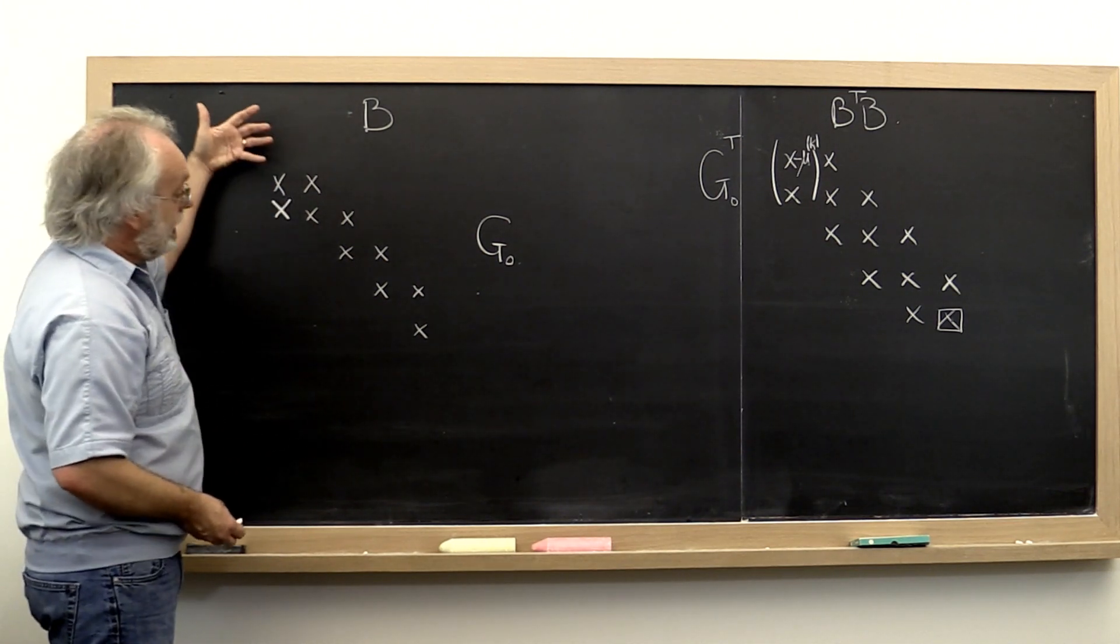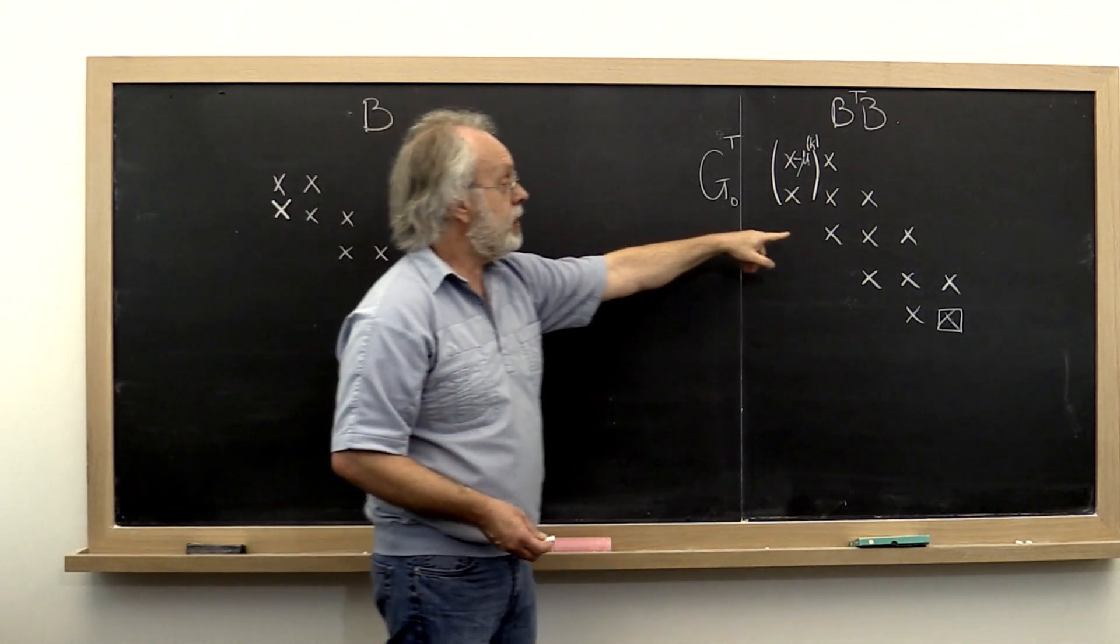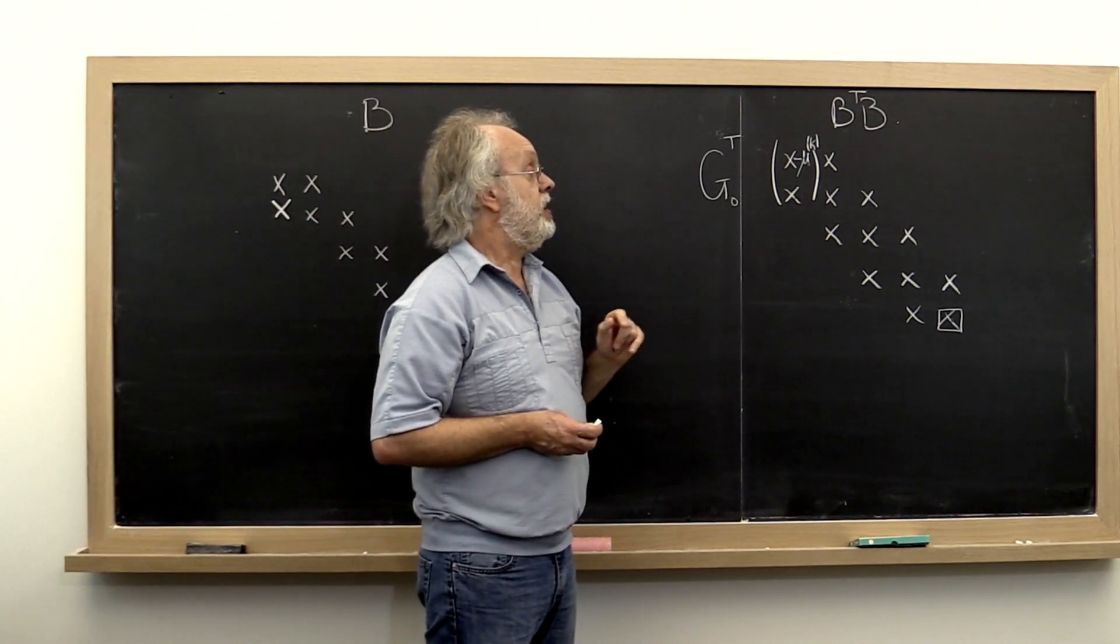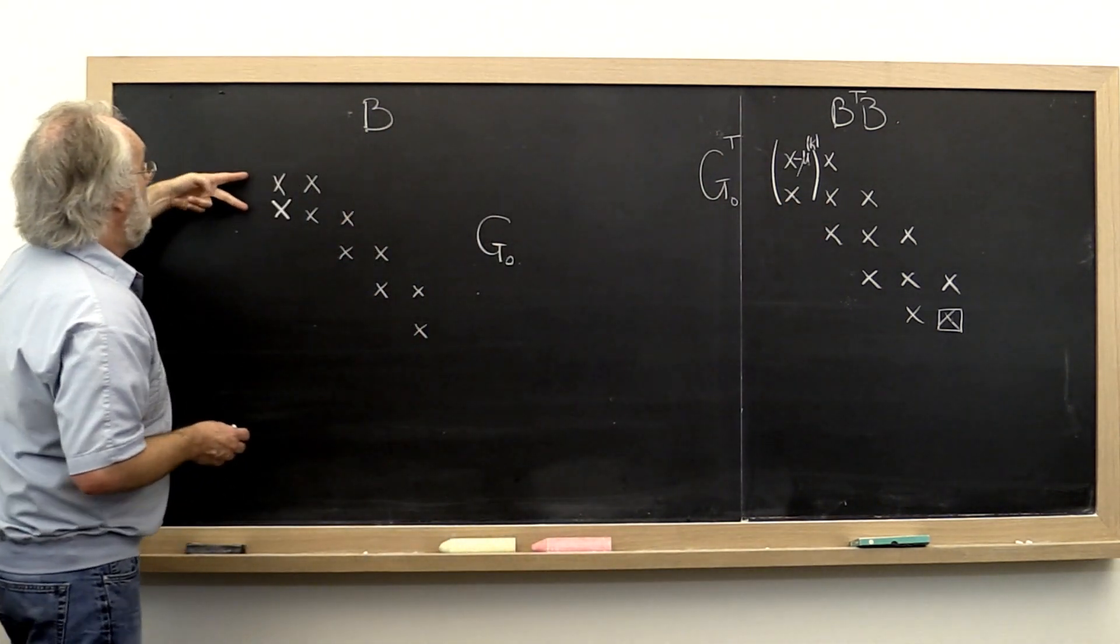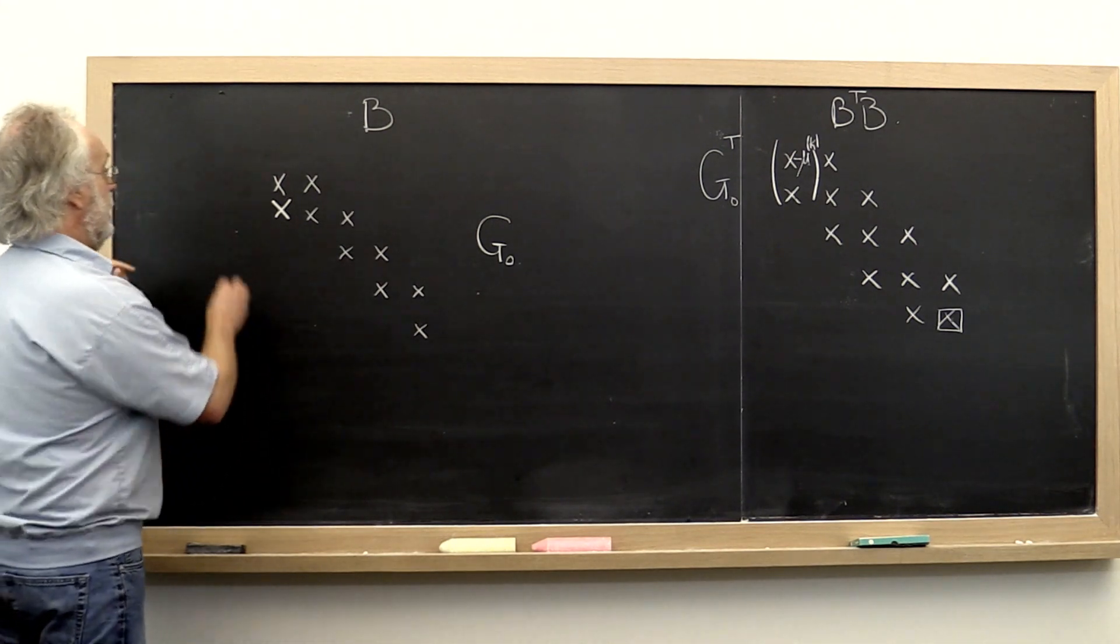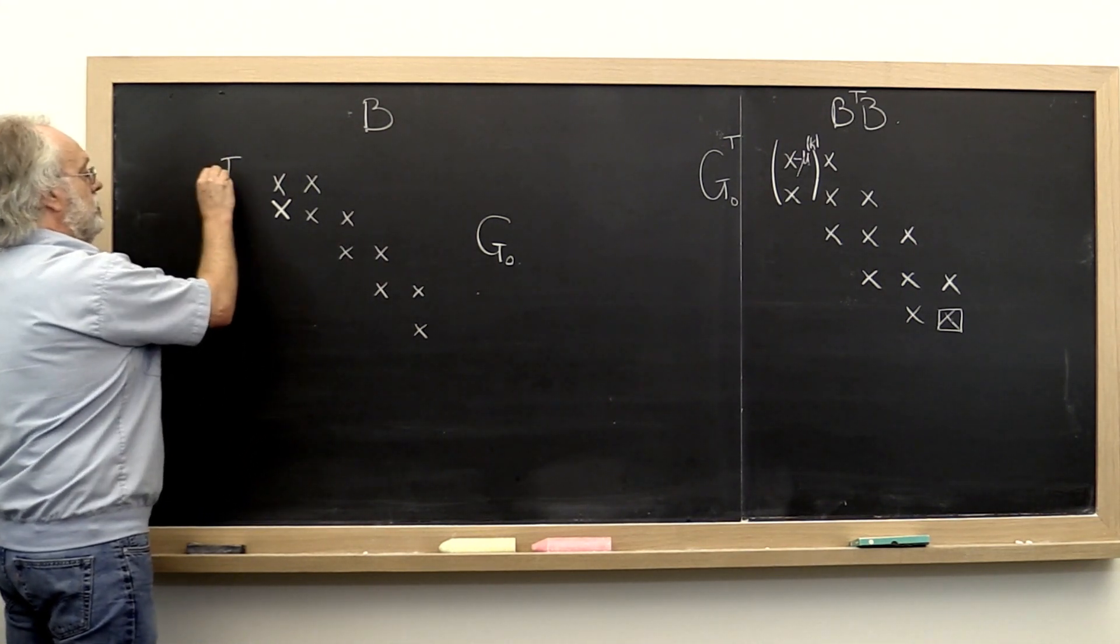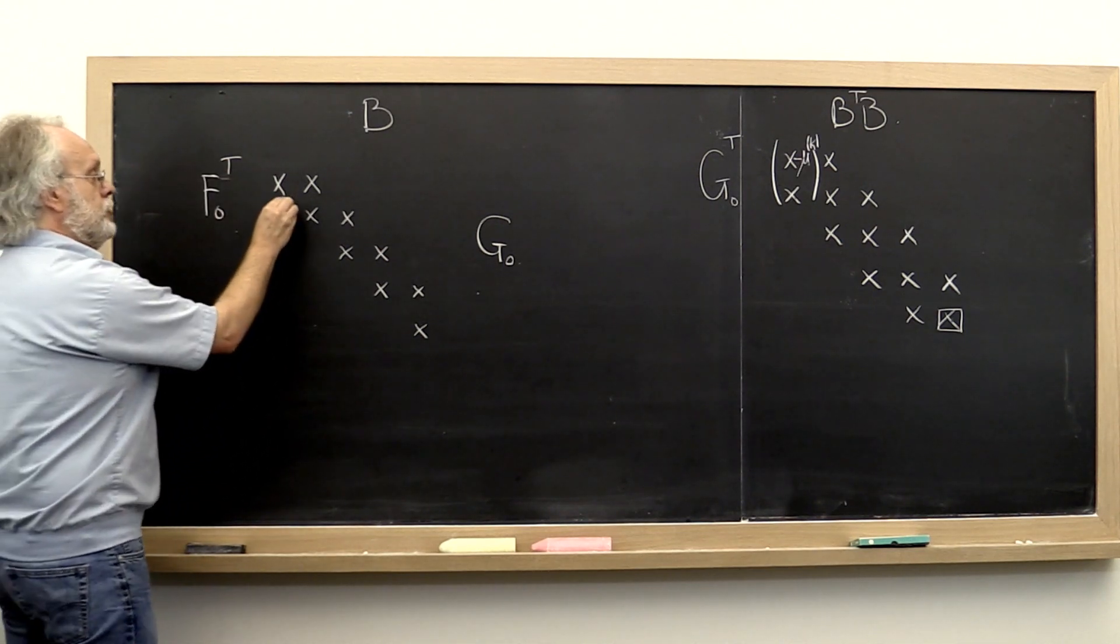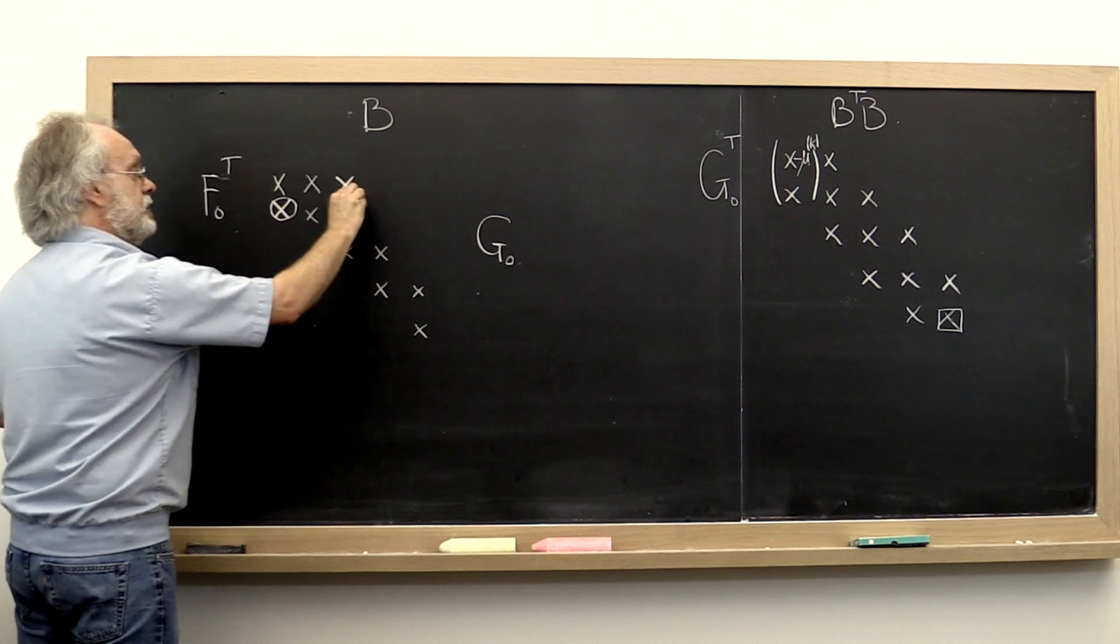And then just like we ended up chasing that out had we done this computation with the tridiagonal matrix, we can now compute a Givens rotation from the left. Let's call it F0 transpose to introduce the zero here, which then introduces a nonzero there.